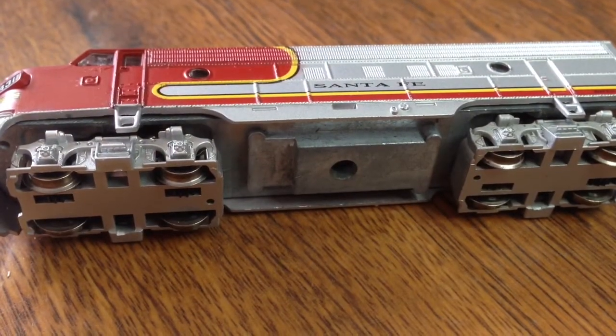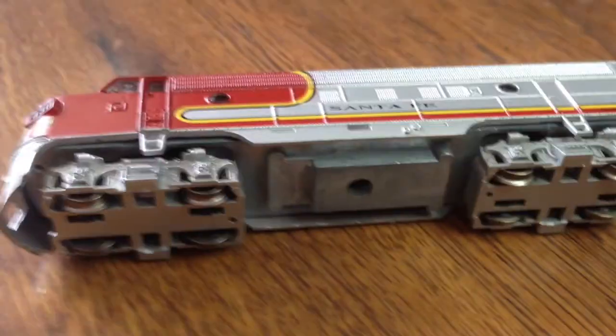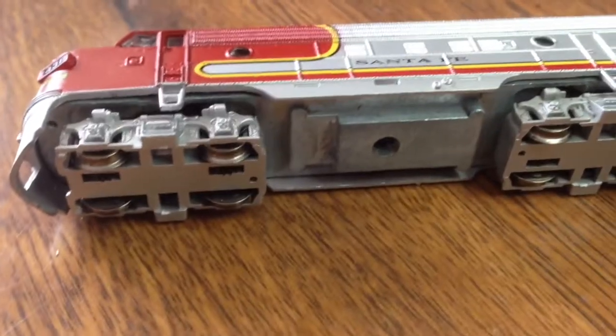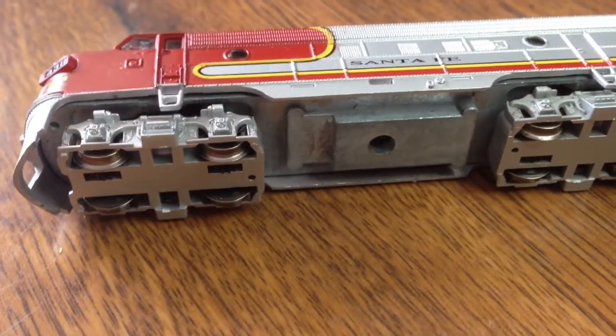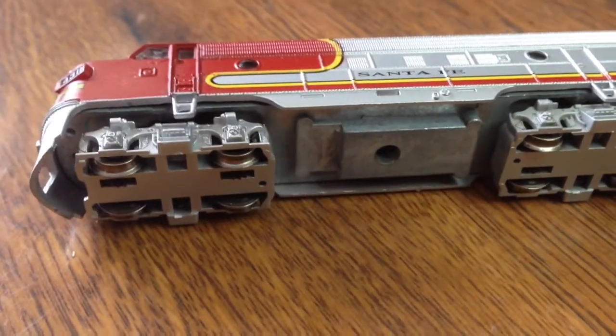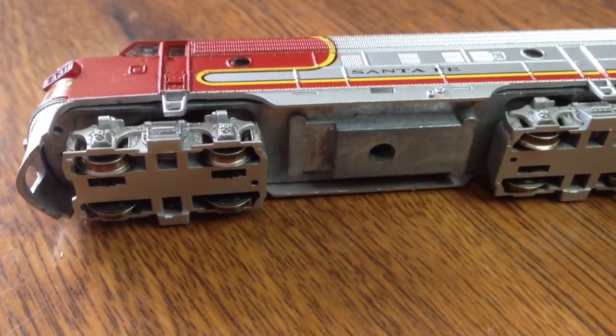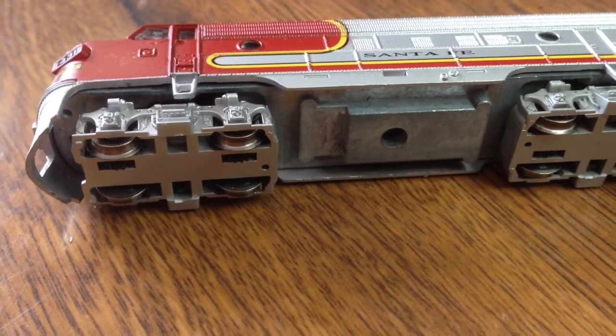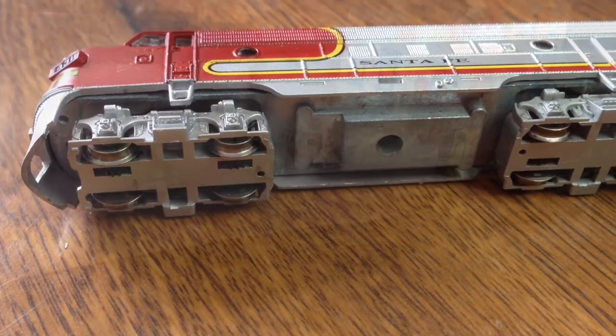So about the only flaw that I'm left with is I'm missing the gas tank. Why they call this an FP7 is because there's a tank that goes here to hold water for the steam generator for the passenger cars. So that's what it looks like on the track.